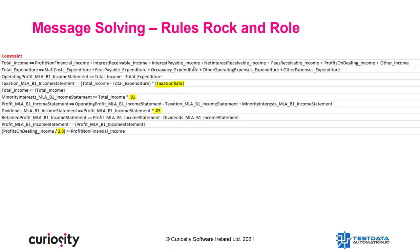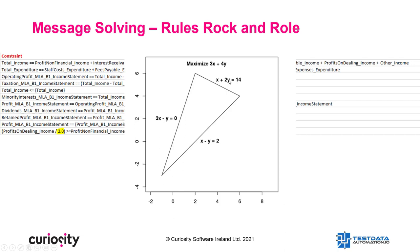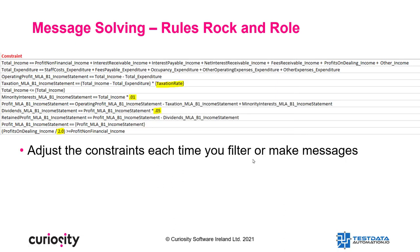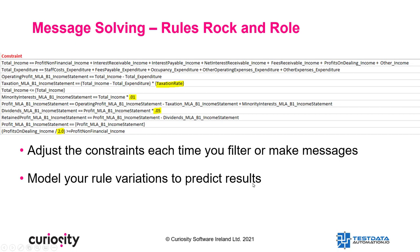The way we do that is by creating a pack of constraint rules. All you have to do for the message is spend a little bit of time and put in all the calculations and ranges that you care about. You can also introduce external variables — in this case I'm playing around with the taxation rate with some fixed values, but you could model these out to see the effect on the calculations as defined by the constraints. In effect, you're creating valid data. You can also force infeasible data — by adjusting the values you can create data inside and outside the feasibility. When solver runs it can create either feasible or infeasible results depending on how you've set up the constraints. You adjust constraints each time you filter or make messages, model your rule variations to predict results, and create multi-variate related data where all variables are related to each other as defined by the constraint rules.